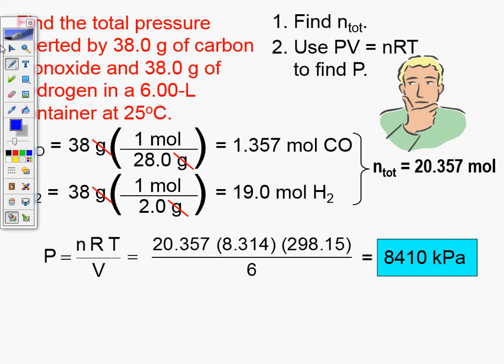The greatest follow-up question in AP Chemistry is: how much pressure is exerted by each gas? How would you do that? Use the mole fraction — multiply the mole fraction by the total pressure. That's pretty easy to do, right?